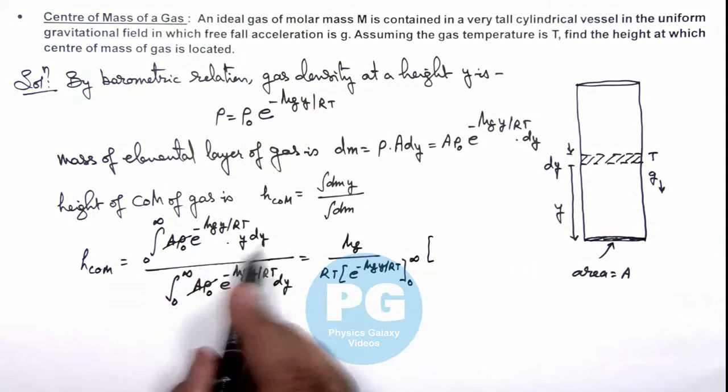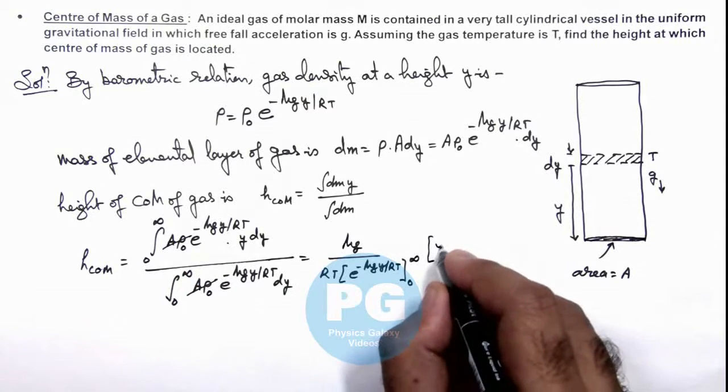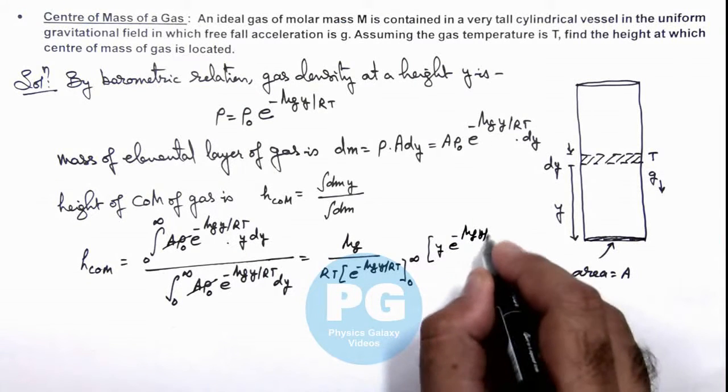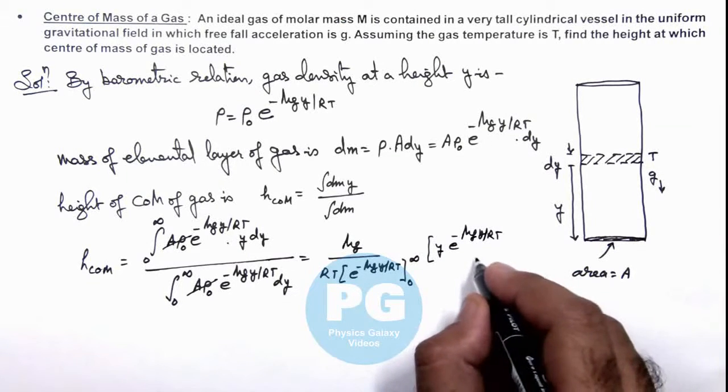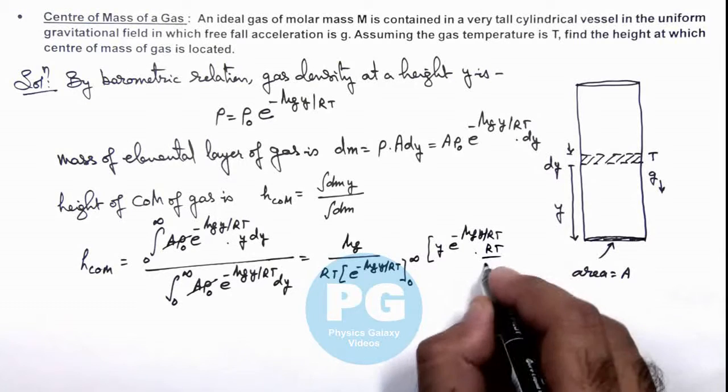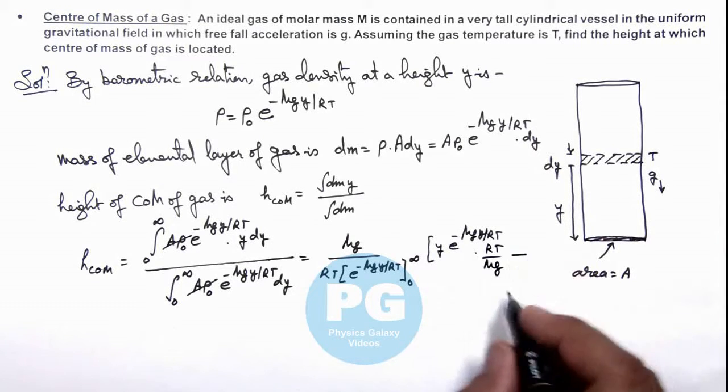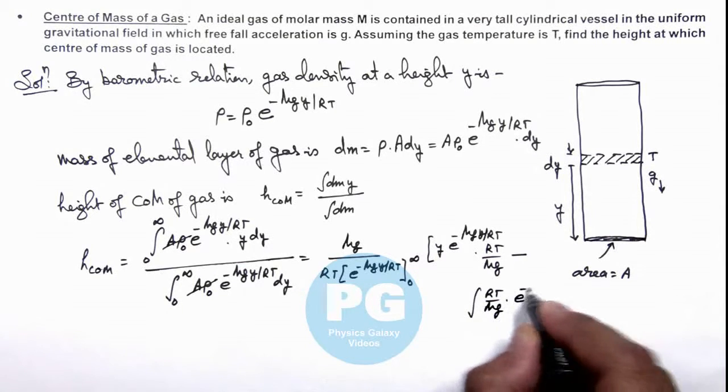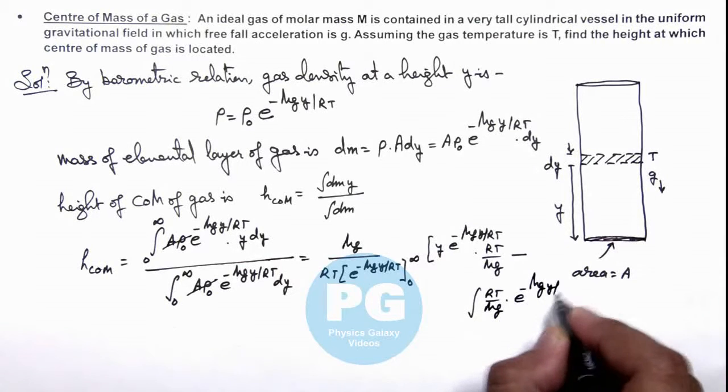And the integration by parts when you integrate this gives y·e^(-Mgy/RT)·RT/Mg minus the rest of the term. Here I can write integration of RT/Mg·e^(-Mgy/RT)·dy.